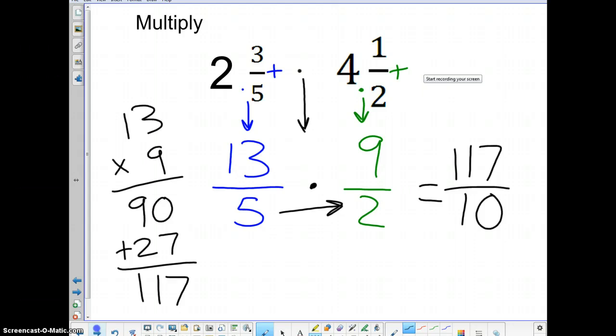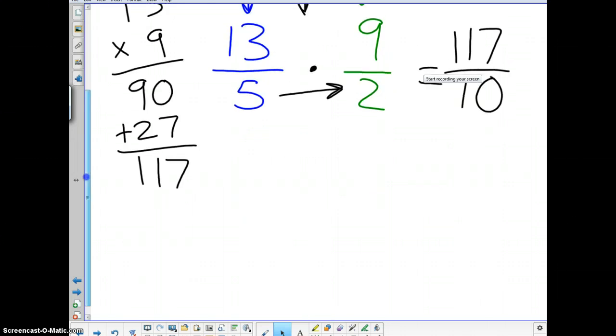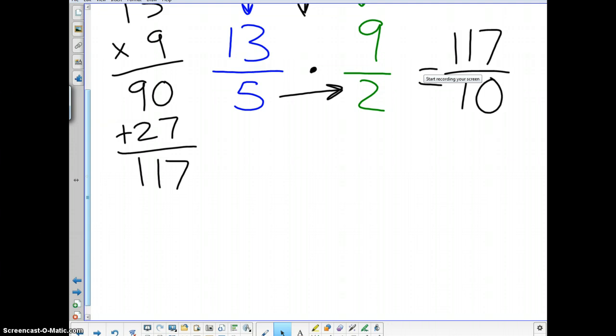So, now we have to simplify. We have to put this back into a mixed number. Obviously, this is still an improper fraction. One-seventeen over ten. We can't do that. We don't want our answers in decimal form either. So, ten goes into one-seventeen. I believe it goes in there eleven times. Eleven times ten would be one-hundred-and-ten. And we have seven left over. So, the seven comes down here. And we have ten there. Eleven and seven-tenths would be our answer.